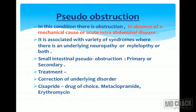Pseudo-obstruction: in this condition there is obstruction in the absence of a mechanical cause or acute intestinal disease. It is associated with a variety of syndromes where there is an underlying neuropathy or myelopathy or both. Small intestinal pseudo-obstruction can be primary or secondary. Treatment is correction of the underlying disorder. Cisapride is the drug of choice; metoclopramide and erythromycin are poorer alternatives.